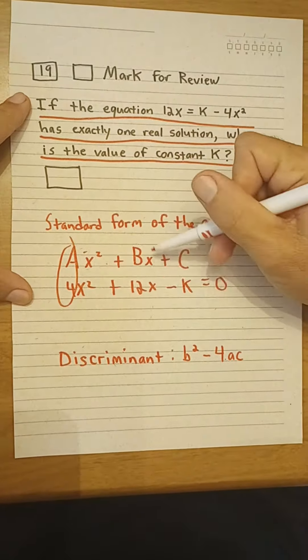Now here we would get 12 squared minus 4 times 4 times negative k equals zero.